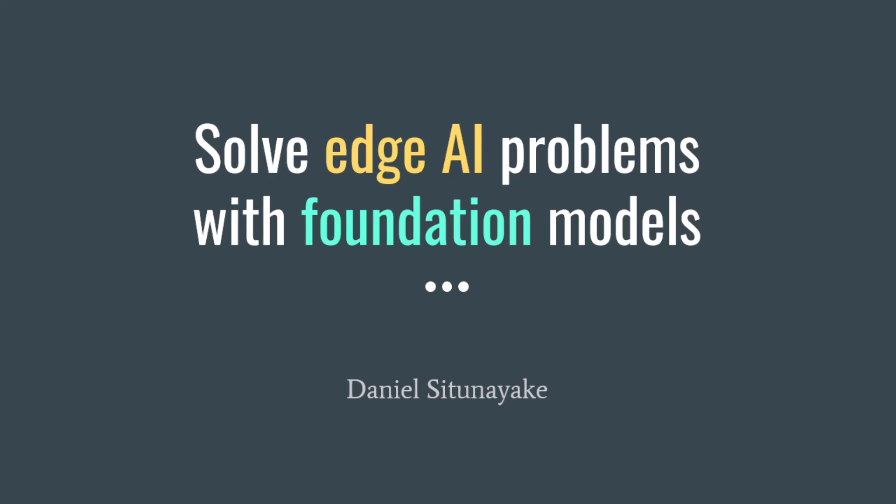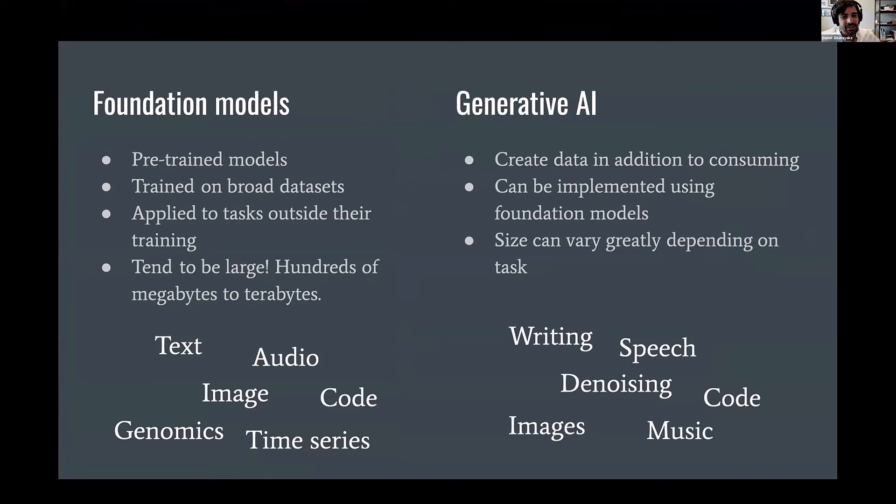I want to talk about foundation models and generative AI. And I think it's very important that we separate those two things because there's a lot of overlap with these terms. So foundation models are really models that are pre-trained on very broad datasets and then applied to tasks outside of their training. So because of that nature, they tend to be quite big. They have to be big to represent this data that they're trained on. And you can train across all sorts of data modalities, including mixed modalities.